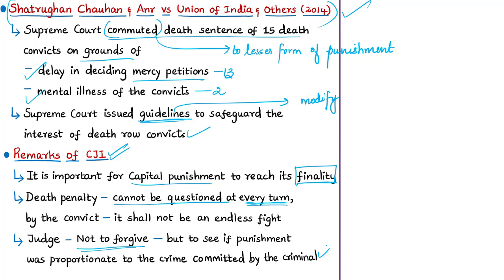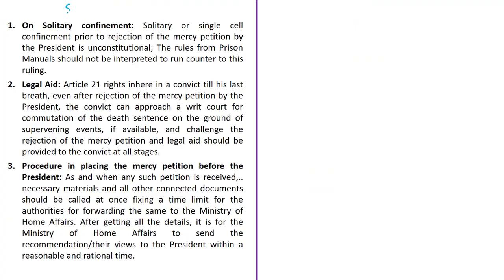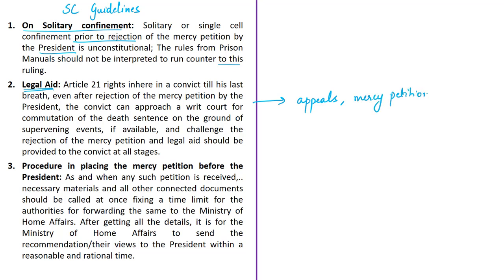The first Supreme Court guideline deals with solitary confinement: solitary or single cell confinement prior to rejection of the mercy petition by the President is unconstitutional. Prison manuals of states should not be interpreted to violate this guideline or Article 21 of the Constitution. The second guideline is about legal aid for death row convicts — for preparing appeals against death penalty, mercy petitions, or accessing judicial remedies after rejection of the mercy petition. Even after rejection of the mercy petition by the President, the convict can approach a writ court for commutation, and legal aid should be provided at all stages.